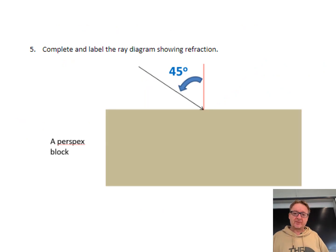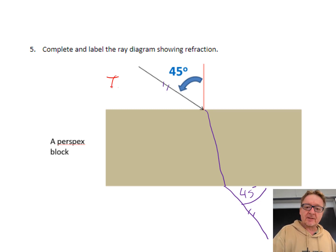Complete and label the ray diagram showing refraction. I always think of refraction as the bending of light. When it goes in, it hits it, it bends, and it comes out. That line there and that line there are parallel. That there is also 45 degrees. So this is the incident ray, and this one is the refracted ray.